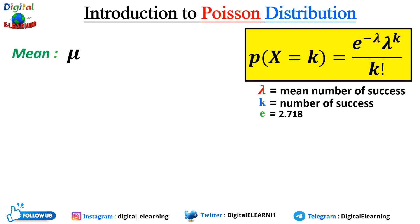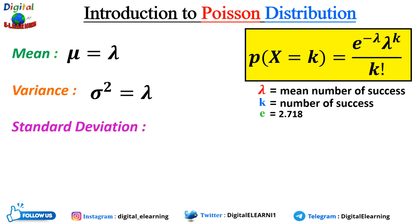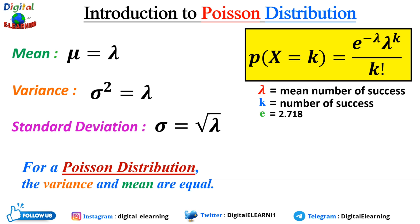The mean is given by μ = λ, representing the average or expected number of events occurring within the fixed interval. The variance of the Poisson distribution is also equal to lambda, representing the measure of spread or dispersion around the mean. The standard deviation is the square root of the variance, or √λ. For a Poisson distribution, the mean and variance are equal and are both determined by the parameter lambda. If you know the average rate of events occurring, you can determine both the expected mean and the variance of the distribution.